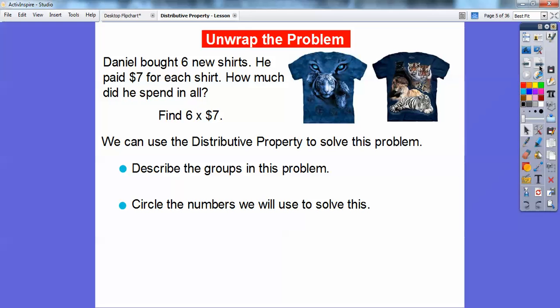Let's describe the groups in this problem. The groups are going to be the six new shirts at $7 apiece. Circle the numbers we're going to be using. We're going to circle the six and the seven. So we're going to do 6 times 7 and we're going to use the distributive property to help solve this.